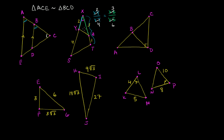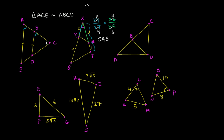So by SAS, we know that the two triangles are similar. But we have to be careful about how we state the triangles to make sure we get the corresponding sides. We can write that triangle XYZ is similar to triangle XTS — starting at X, which is the vertex at the angle, going to the shorter side first. So XYZ is similar to XTS.